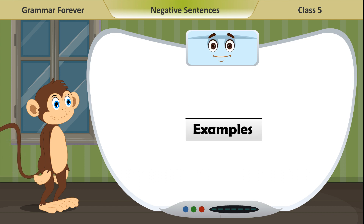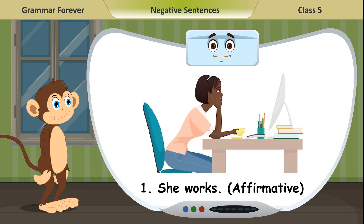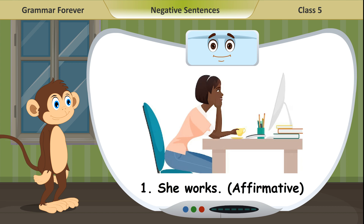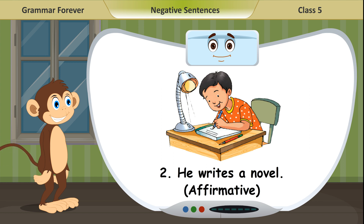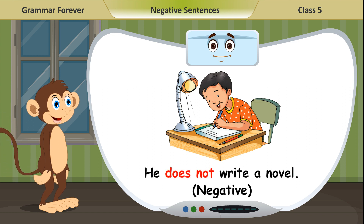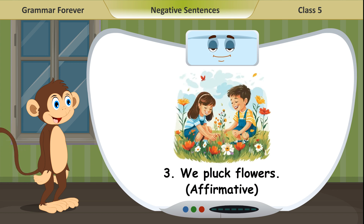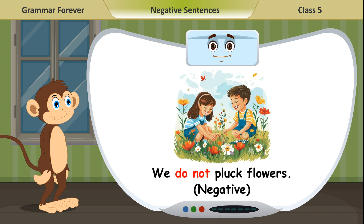Examples. 1. She works (affirmative). She does not work (negative). 2. He writes a novel (affirmative). He does not write a novel (negative). 3. We pluck flowers (affirmative). We do not pluck flowers (negative).